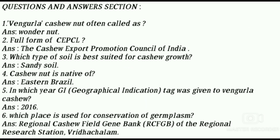Some review questions: Vengurla cashew is often called — answer: wonder nut. Full form of CEPCI — the Cashew Export Promotion Council of India. Which type of soil is best suited for cashew growth — sandy soil. Cashew nut is a native of eastern Brazil. In which year was the geographical indication tag given to Vengurla cashew — 2016. Which place is used for conservation of germplasm — Regional Cashew Field Gene Bank of Regional Research Station, Vriddhachalam.